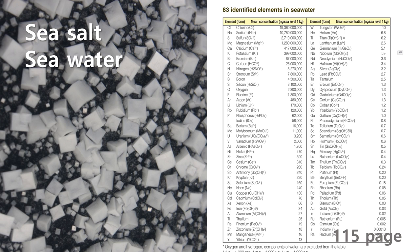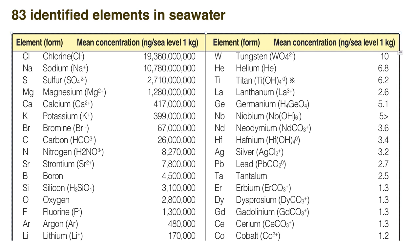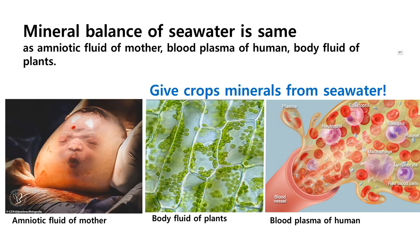So let me introduce a groundbreaking material to supplement the minerals needed for various plants. And that is simply sea salt — a common household item — or moreover, seawater. As you can see, there are about 83 minerals in seawater. And if you look more closely, it is rich in sulfur, magnesium, calcium, potassium, phosphoric acid, iodine, and boron. What's even more amazing is that the nutritional balance of minerals in seawater is very similar to the amniotic fluid in a mother's womb, and to the fluid of plants.